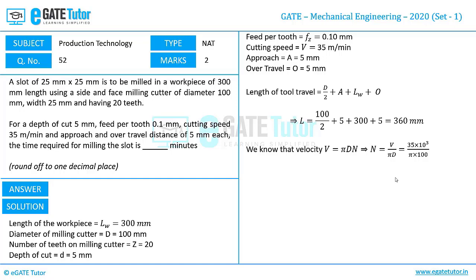Now let us calculate the feed rate, which is feed per tooth multiplied by number of teeth multiplied by the rotational speed of the milling cutter. Substituting all the corresponding values gives us the feed rate as 222.82 mm per minute.